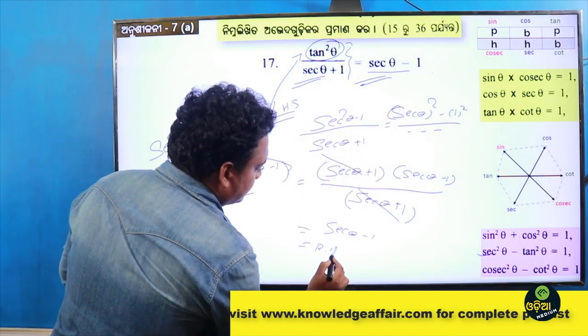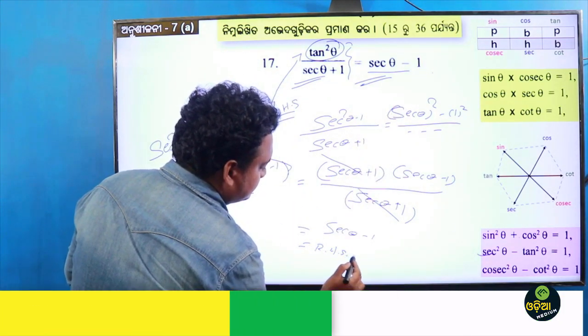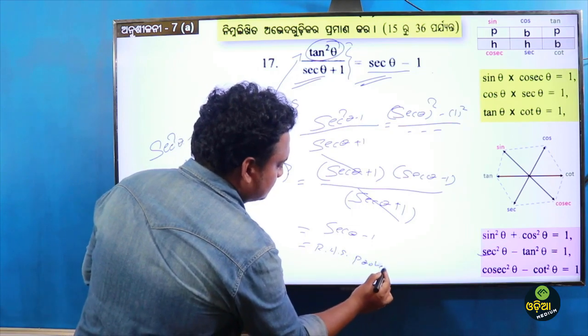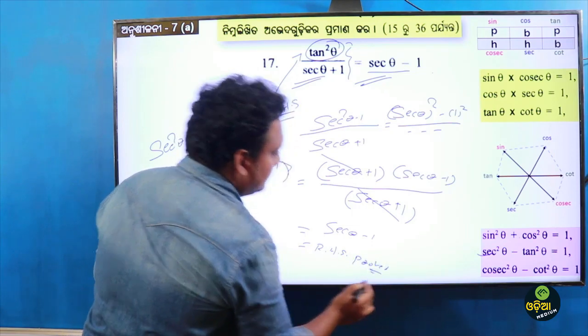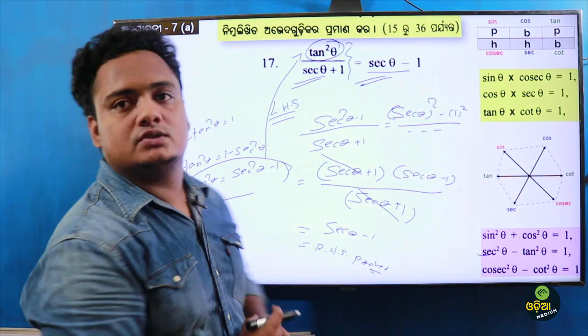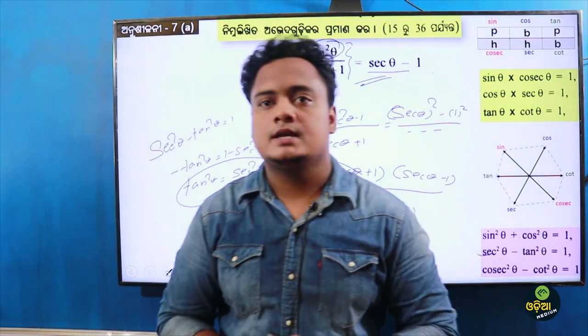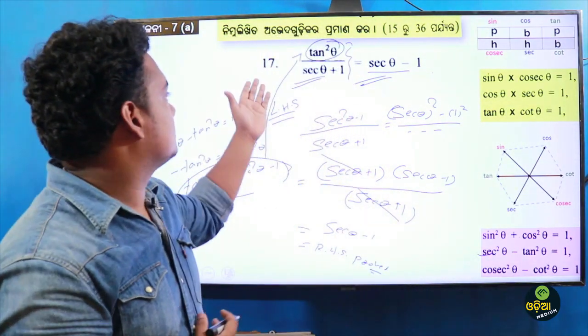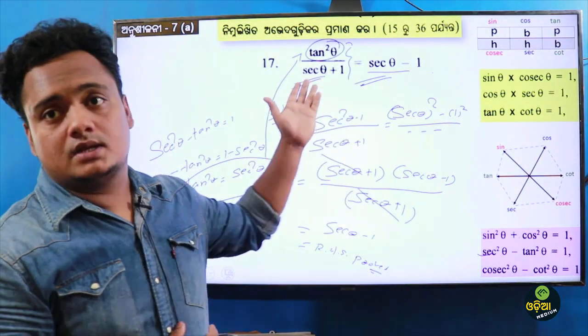RHS — the proof is done. Hopefully you will be able to get it. Next question is number 18.